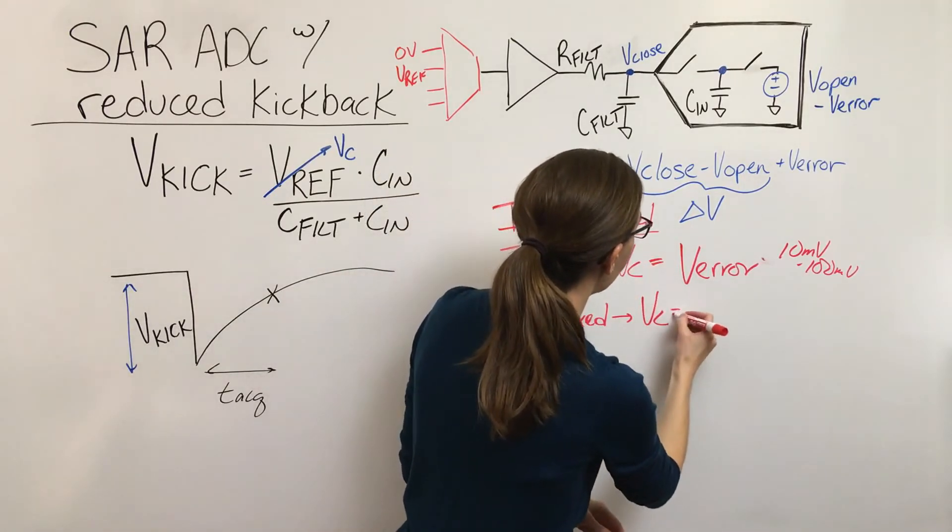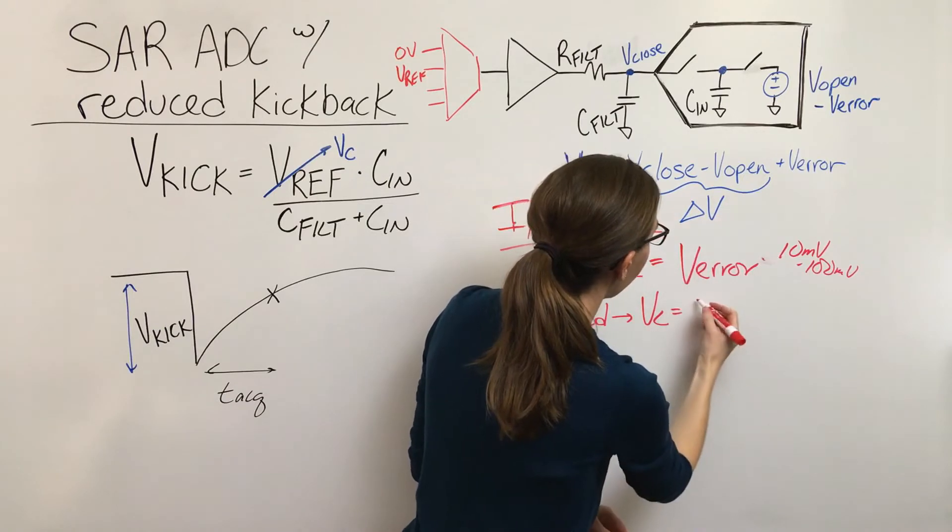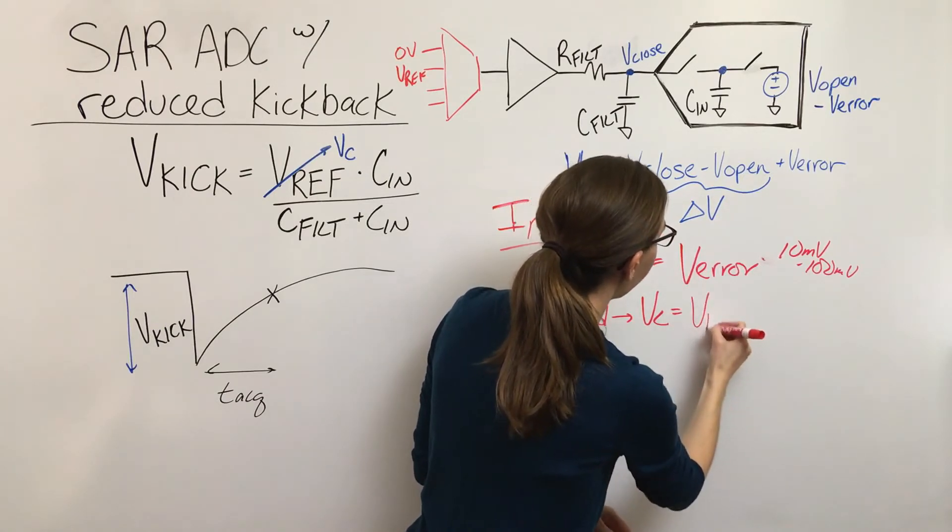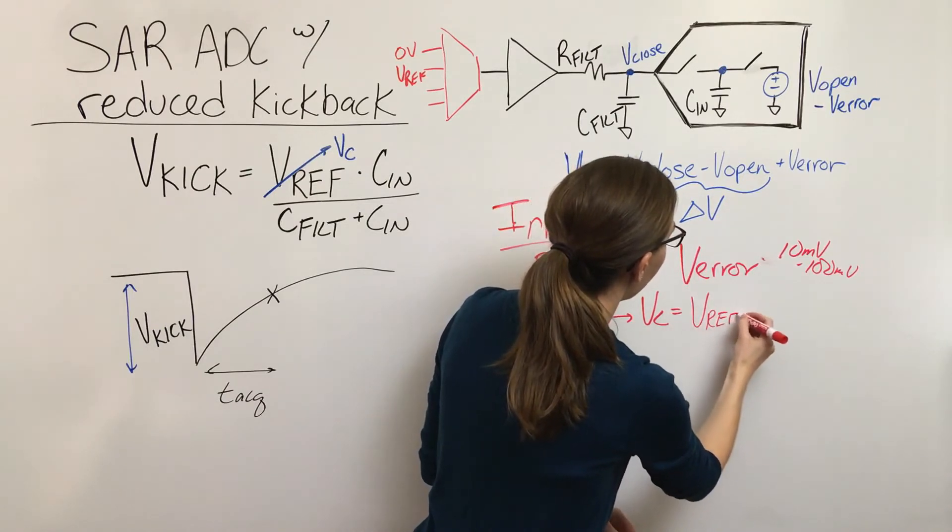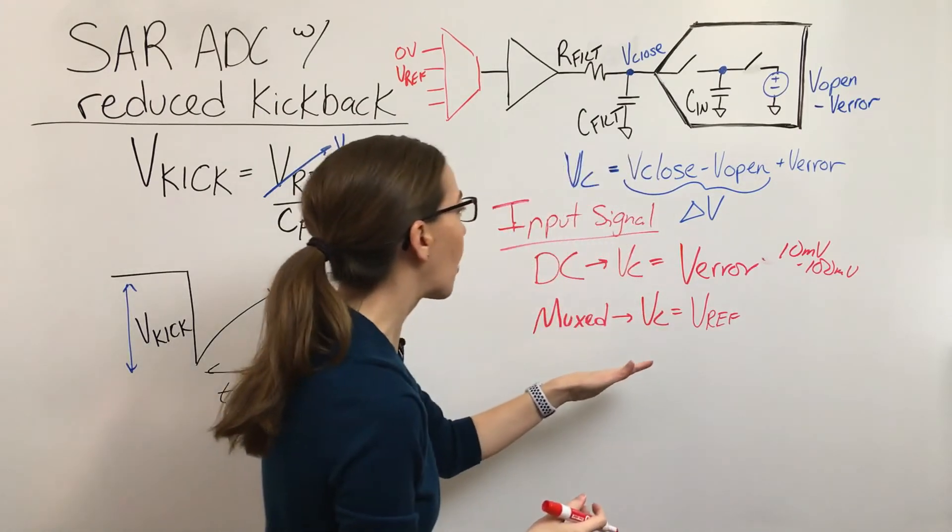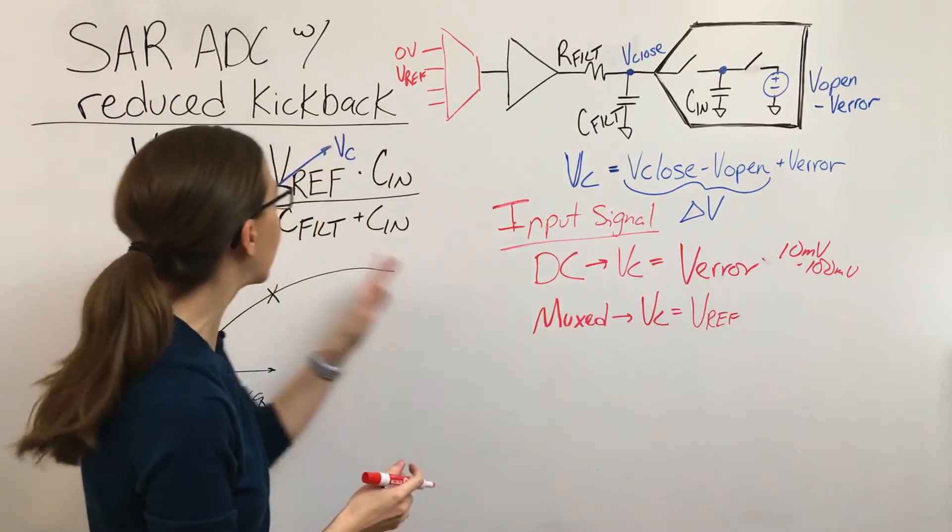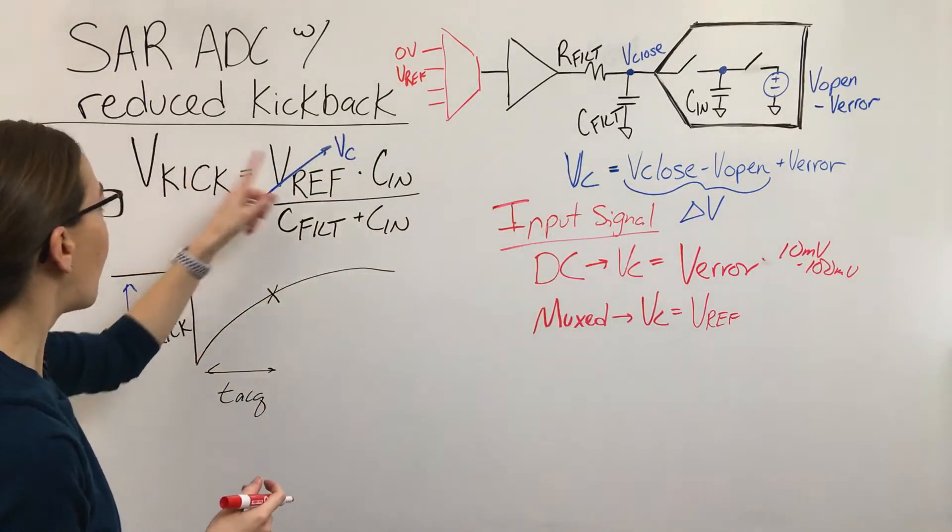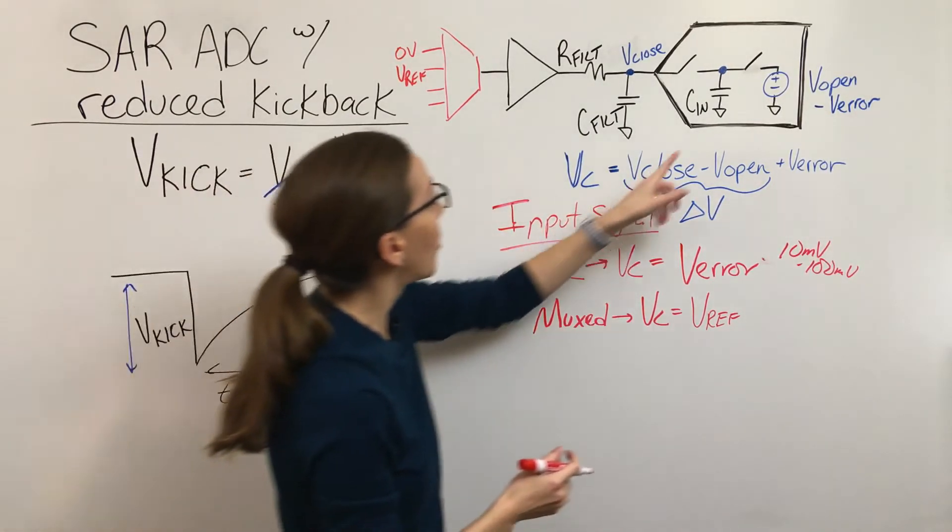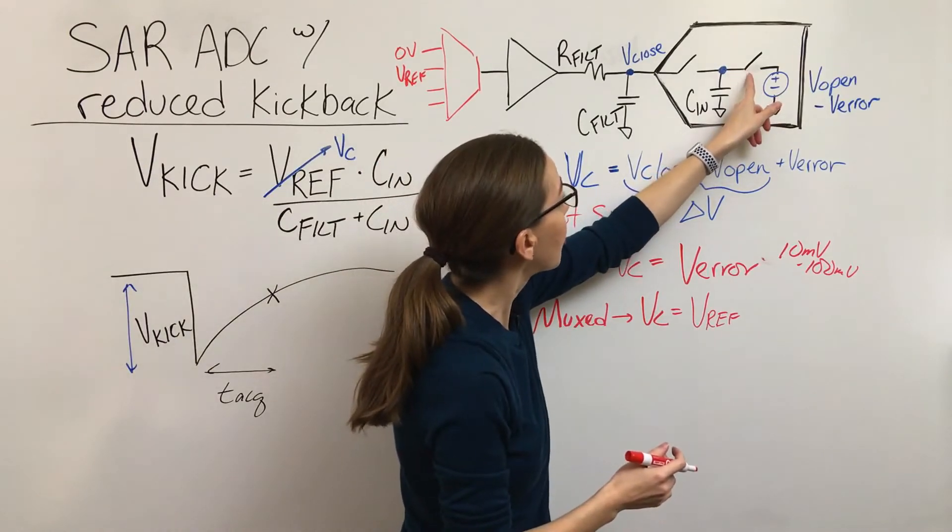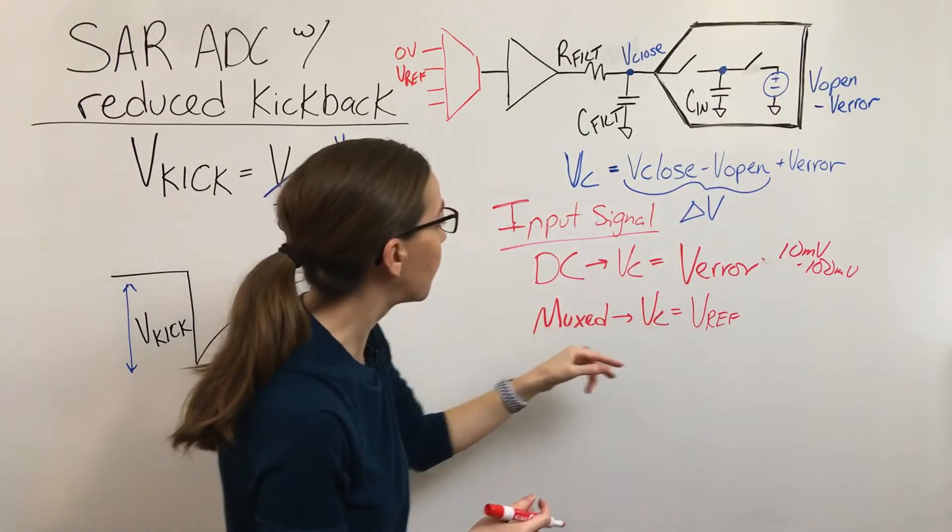So we need to make that assumption that this delta could be VREF. And then in this case, VREF is so large compared to the error that we can just ignore it. And so this is our worst case, and this is identical to what we've discussed previously. So if we assume that this node discharges to ground.